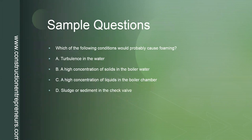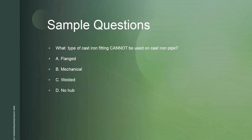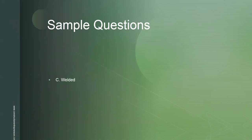Here are some sample questions you'll find on the examination. Question one: Which of the following conditions will probably cause foaming? If you want to follow along, pause the video after reading the question, then play it once you've figured out the answer. The answer is B — a high concentration of solids in the water. Next question: What type of cast iron fittings cannot be used on cast iron pipe? A, flange. B, mechanical. C, welded. D, no hub. The answer is C — welded.